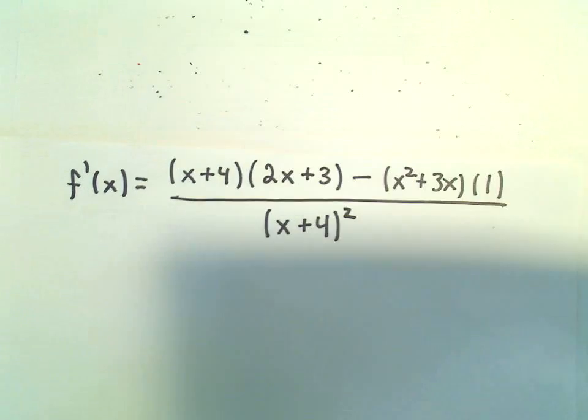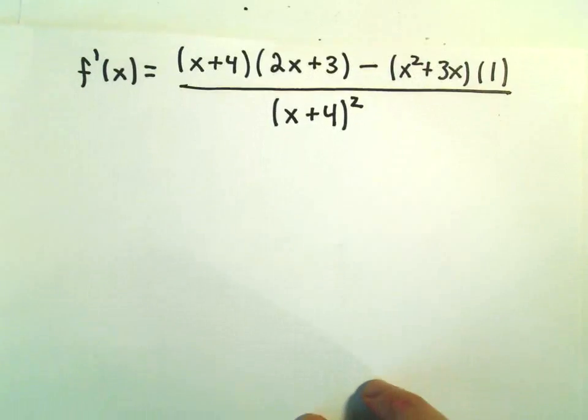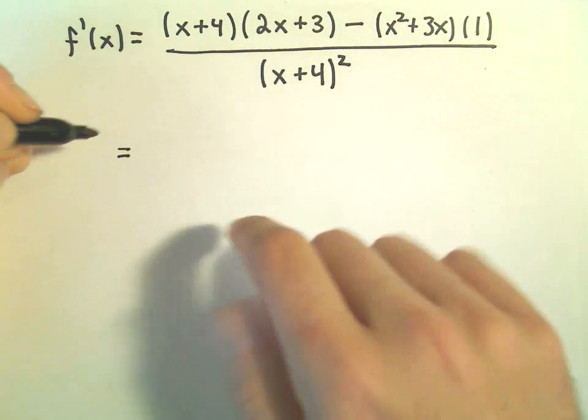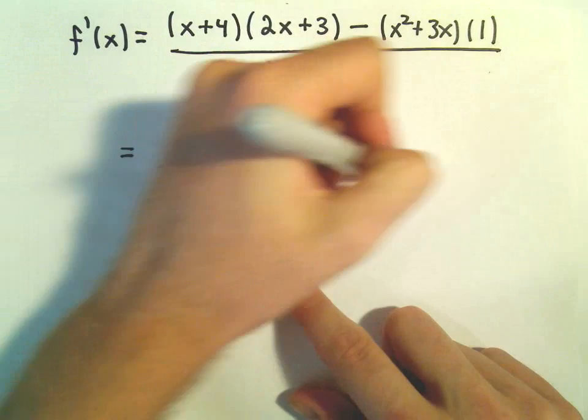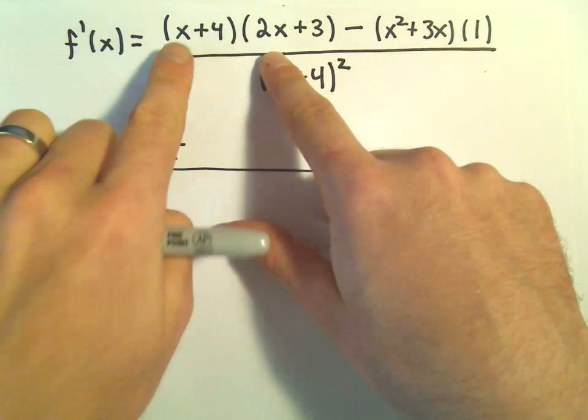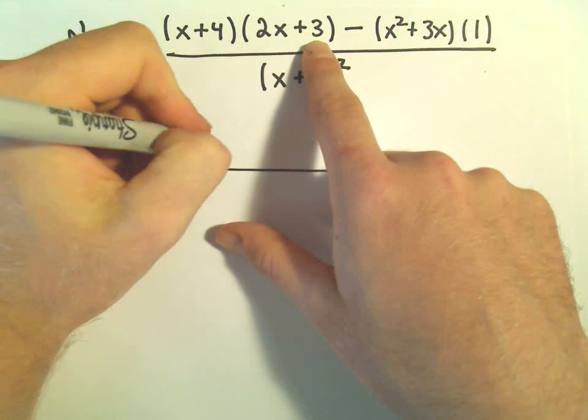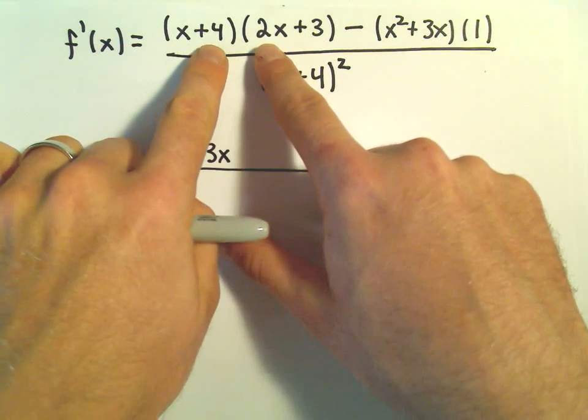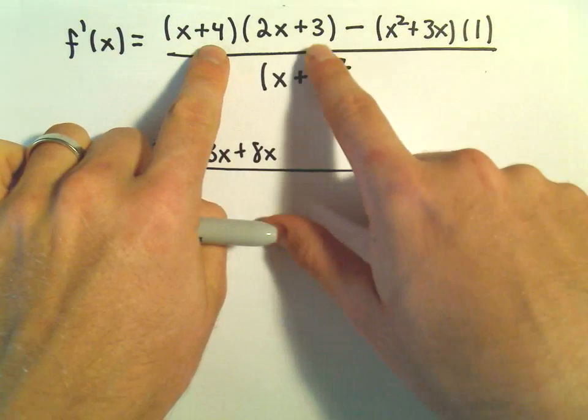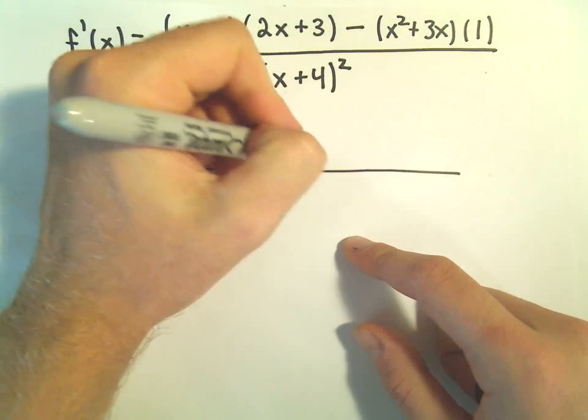So that's what's going to go in our denominator. And now it's just going to be a matter of simplifying this and collecting like terms. So in the numerator, if we distribute, x times 2x would be 2x squared. We would have x times positive 3 or positive 3x. Positive 4 and 2x would give us positive 8x. And then positive 4 and positive 3 would give us positive 12.